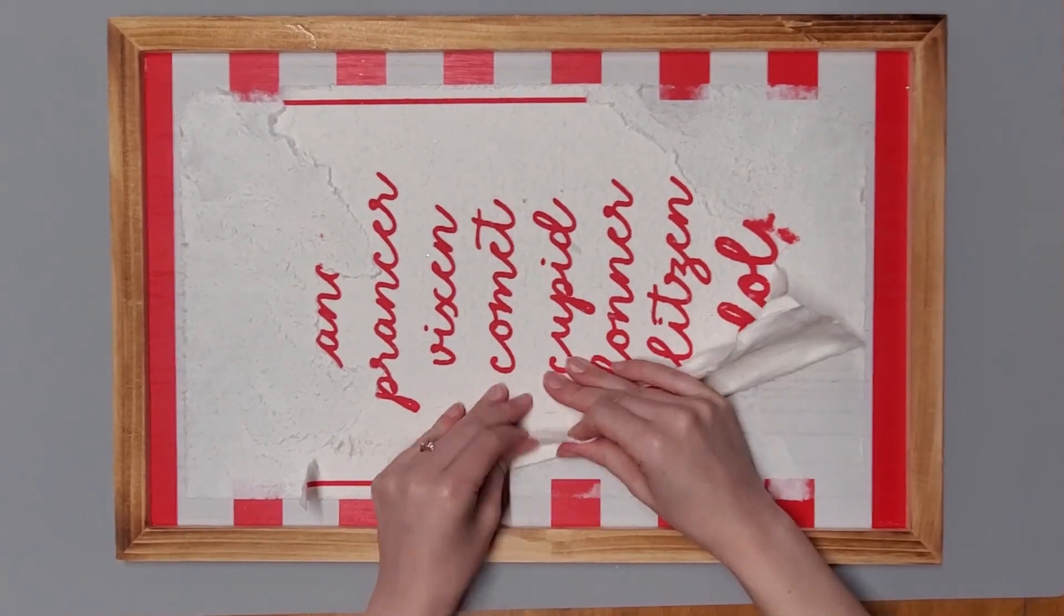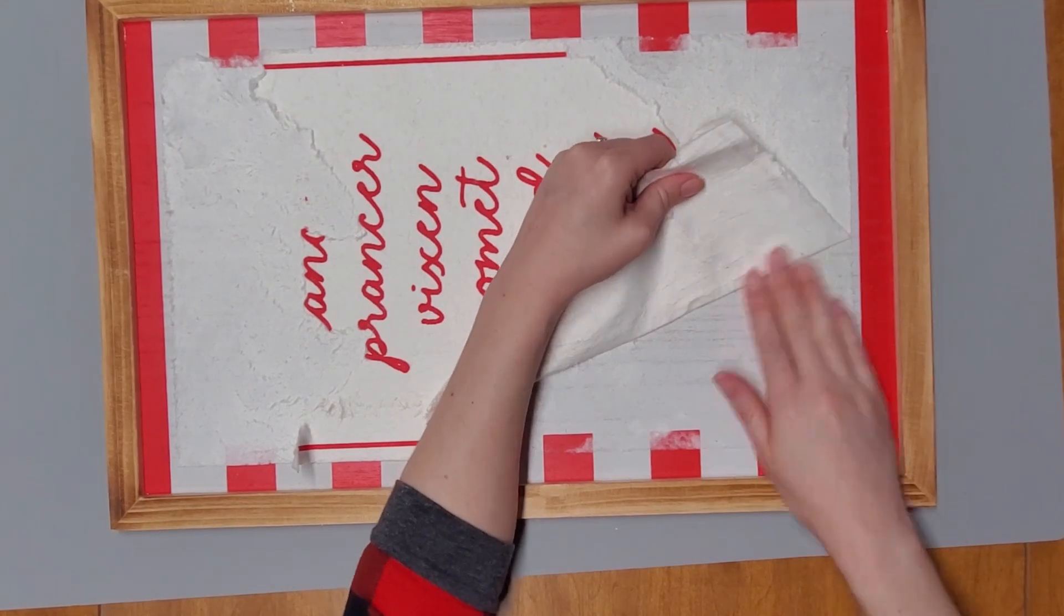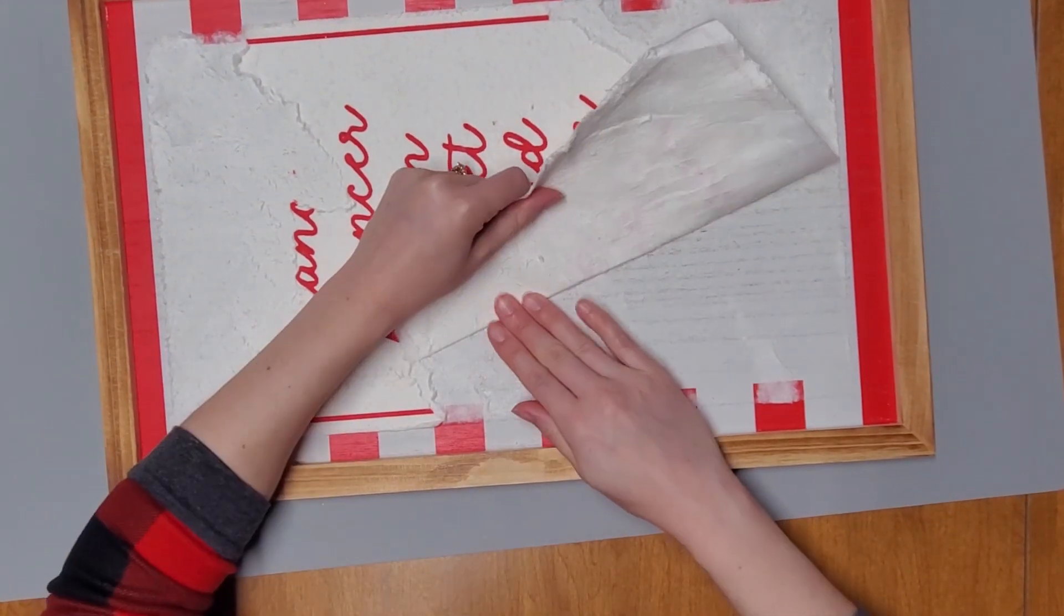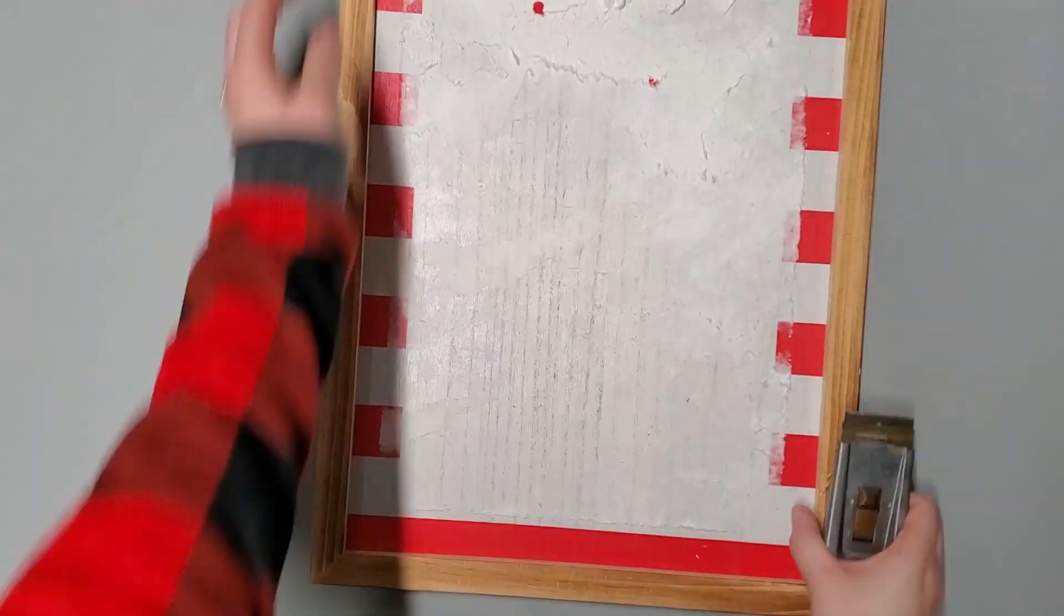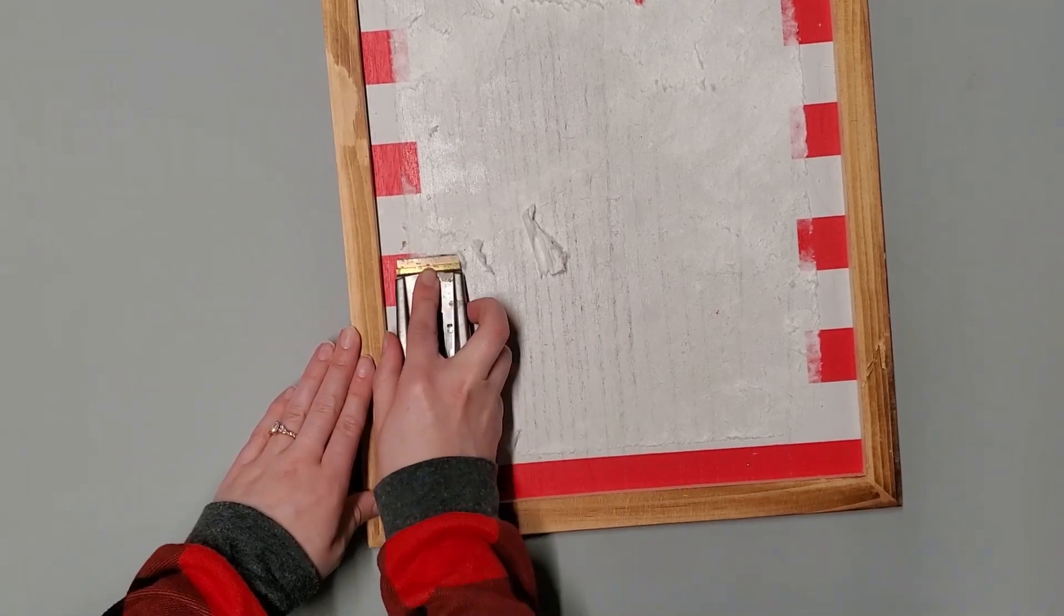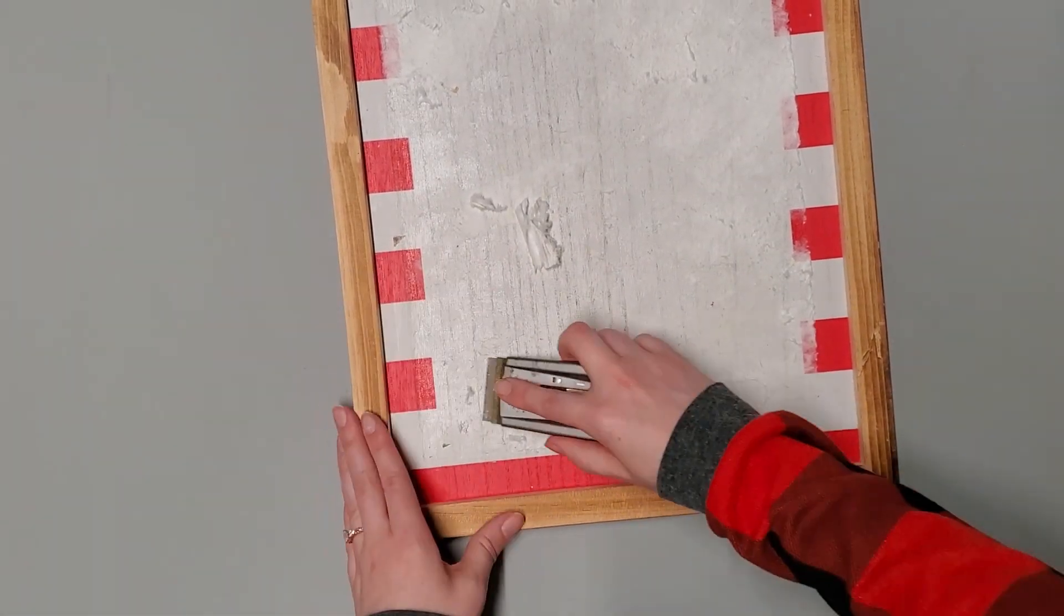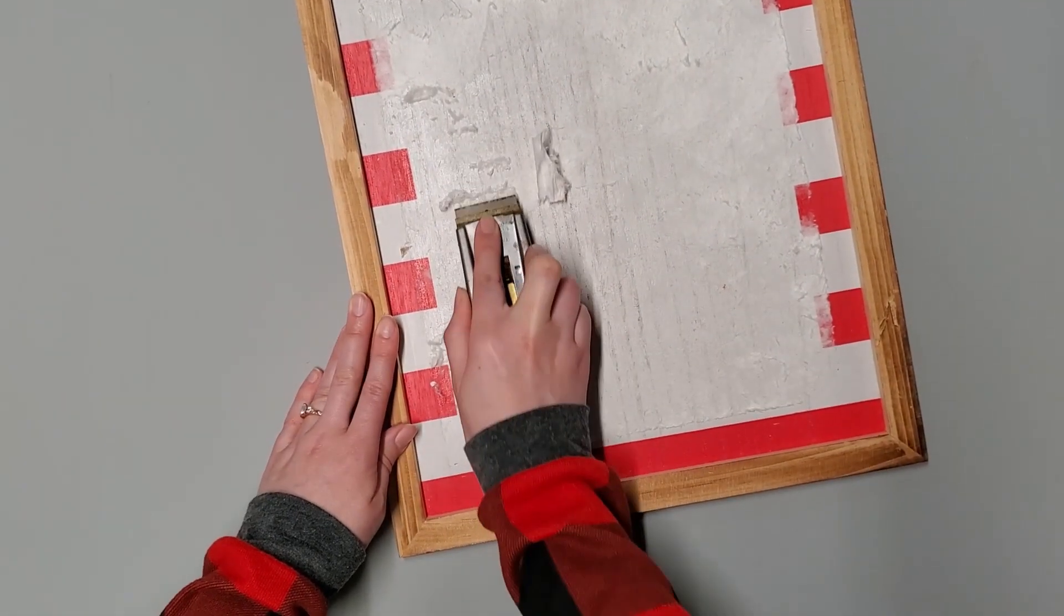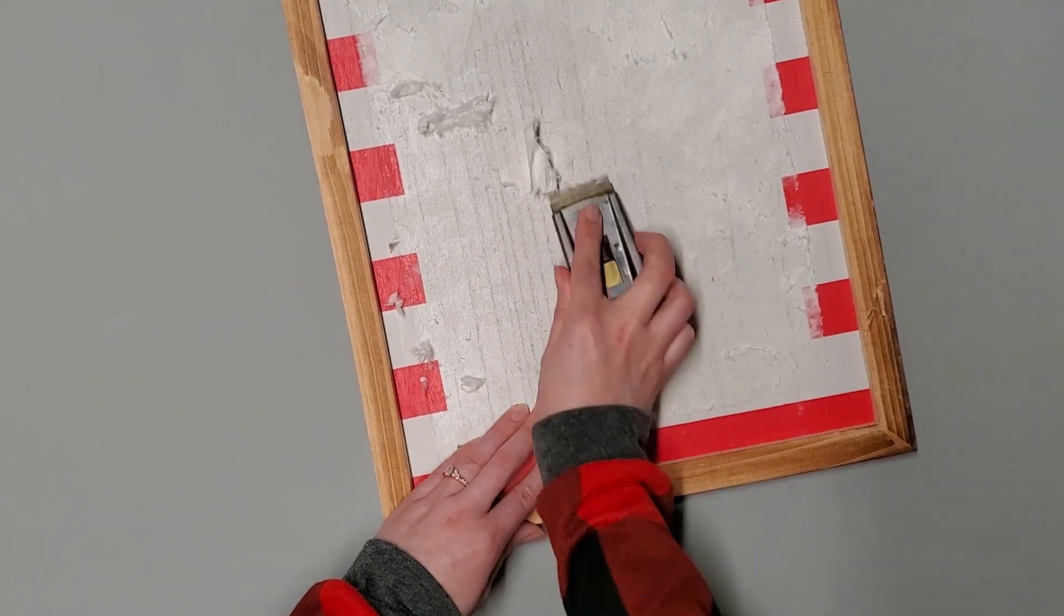This was a struggle. I probably should have heat gunned it or something but I found that if I just kind of rolled it with my fingers, I could get most of this paper off. It was like a weird almost paper mache-ish kind of paper. I don't really know what kind of paper this was but it was really annoying.